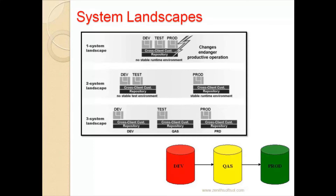In any company there will be five phases in the implementation: the first phase is Project Planning, the second is Blueprint, the third is Realization, the fourth is Final Preparation, and the fifth is Go-Live. In the Blueprint phase, all requirements are gathered before customizing anything in the Development system.